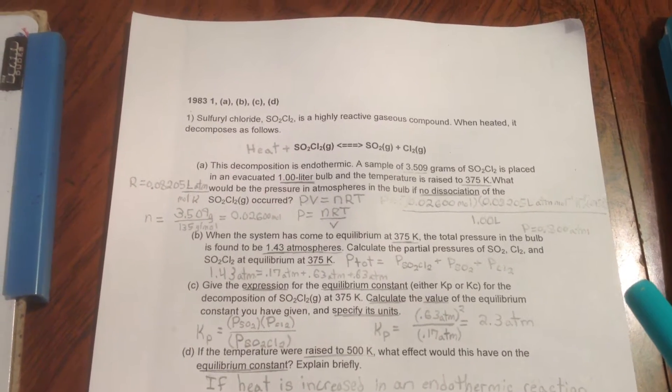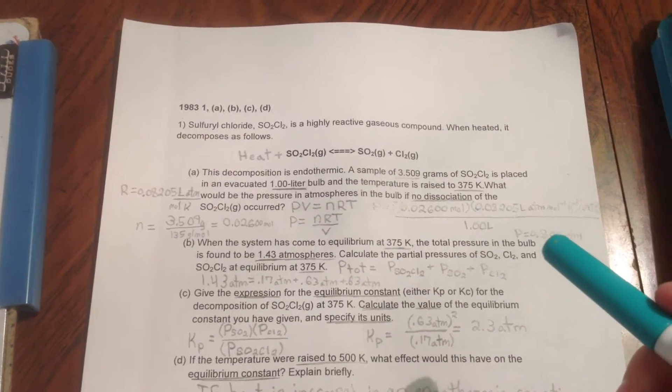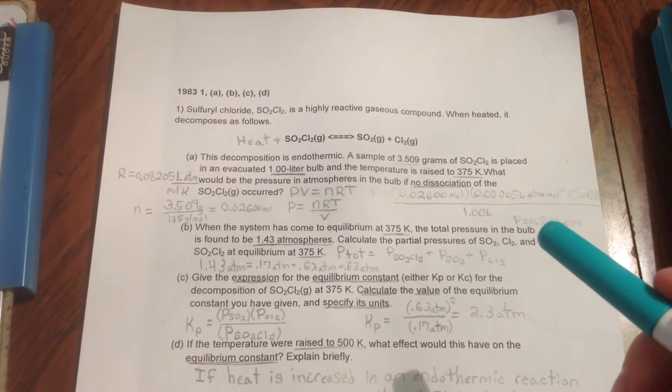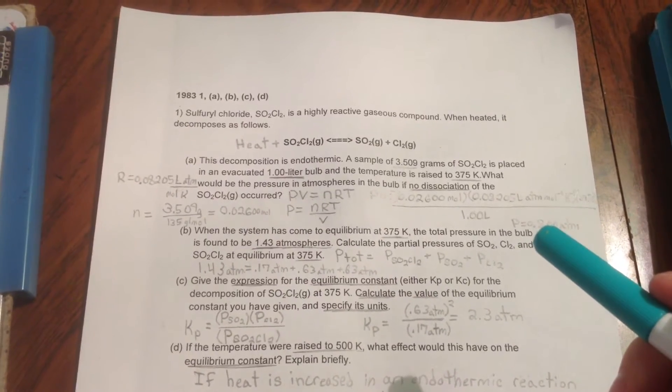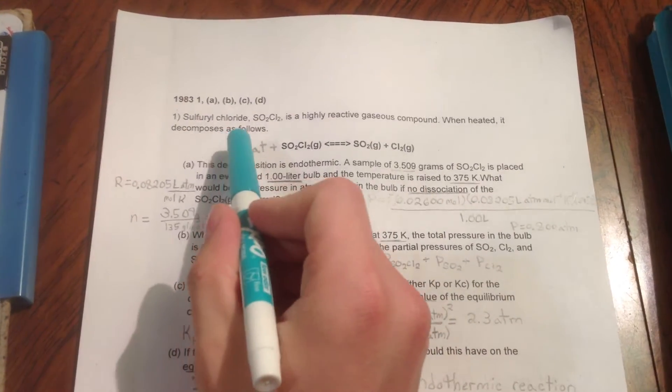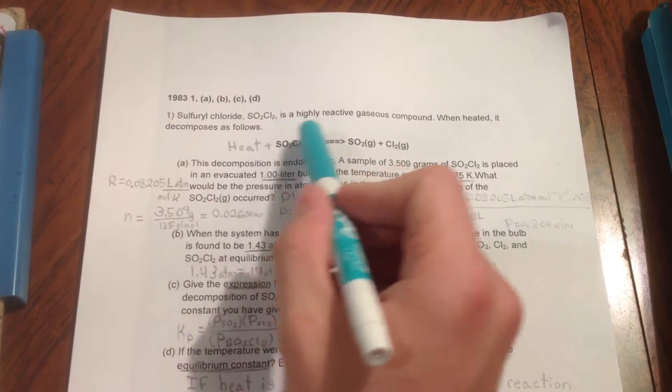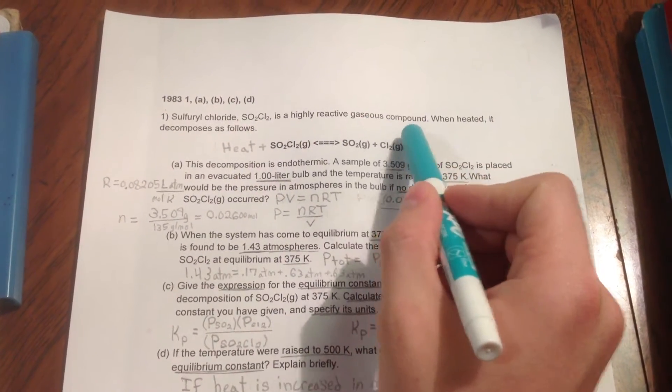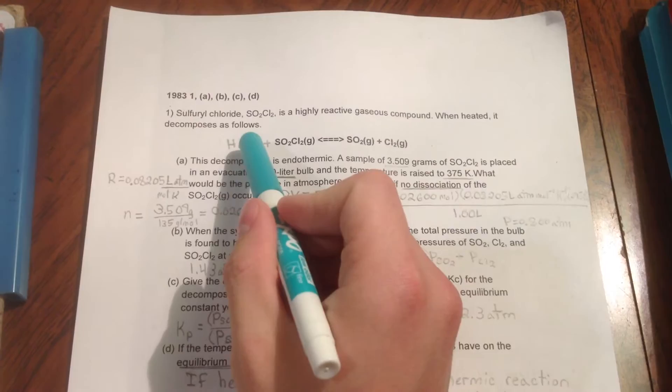This is a tutorial on how to solve the 1983 College Board AP Chemistry Free Response Question No. 1. Sulfurochloride, SO2Cl2, is a highly reactive gaseous compound. When heated, it decomposes as follows.